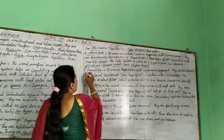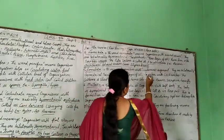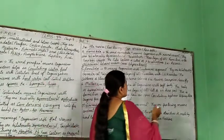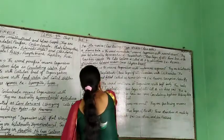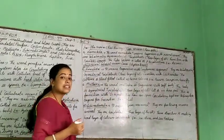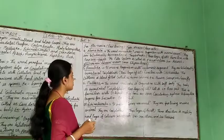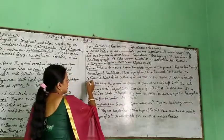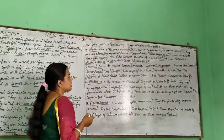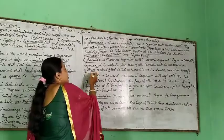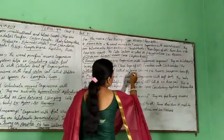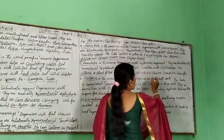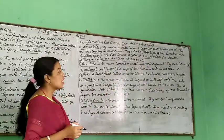Next is Annelida. It means organisms with metameric segments — meaning the body is divided into segments. They are bilaterally symmetrical and triploblastic. The coelom is present and blood-filled, called haemocoel. Examples of Annelida: earthworm, scorpion, and housefly.